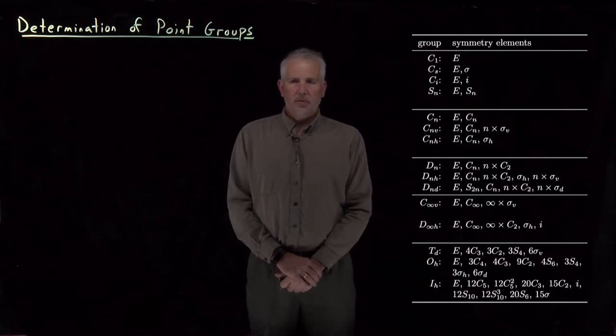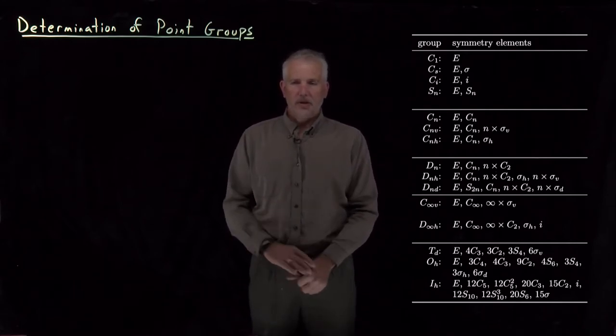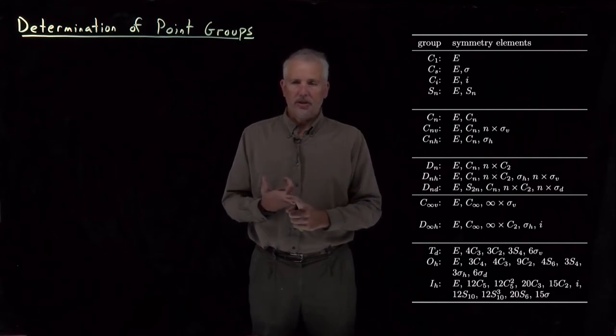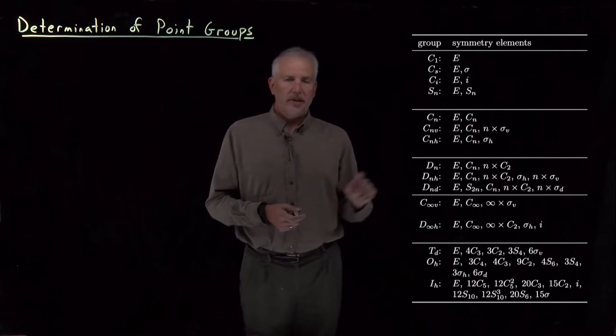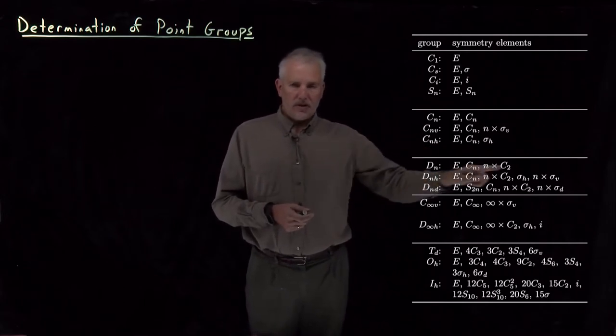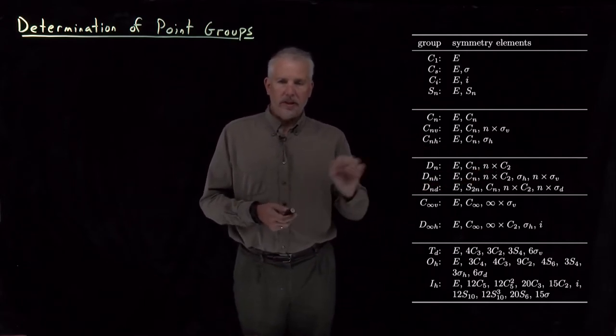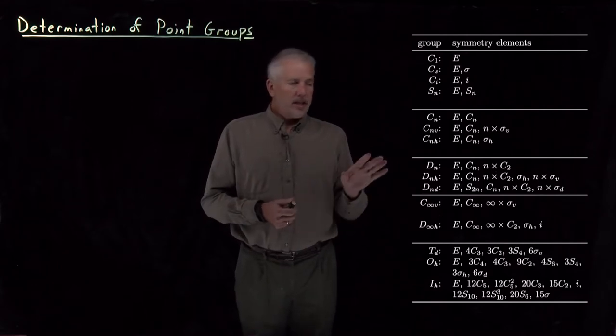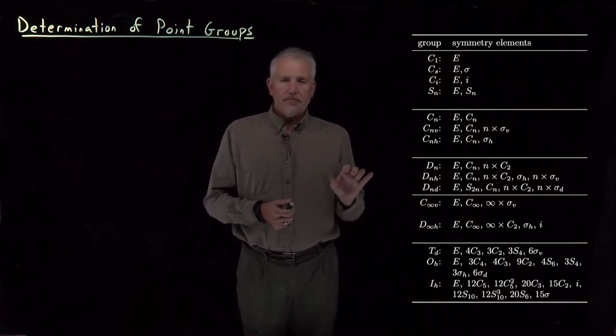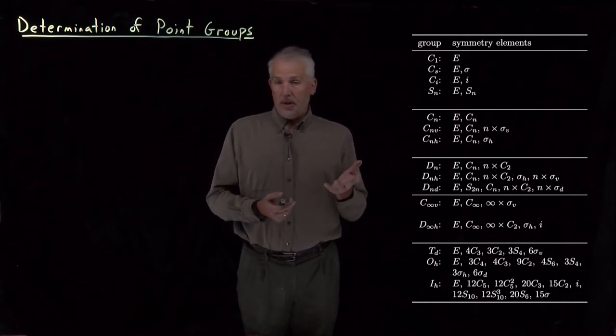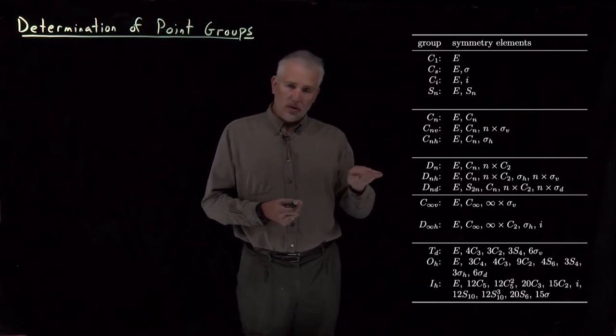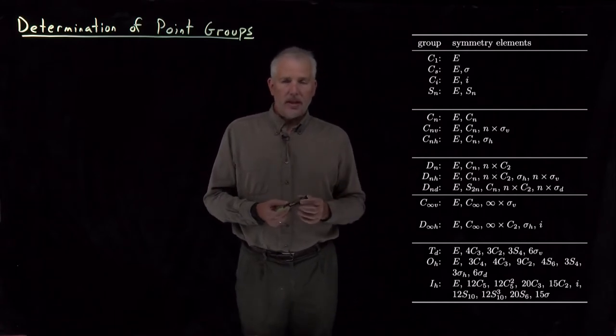All right, so if we want to know what point group a molecule belongs to, the procedure we have at the moment is first we identify all the symmetry elements that the molecule has, and then we can go searching in this table and find which of these lines corresponds to the symmetry elements of the molecule, and then we've identified the point group. That's fine, it works. It can be a little annoying to have to identify all the symmetry elements, and it's particularly error-prone because if you miss one of the symmetry elements, then you won't perhaps identify the right line on the table.